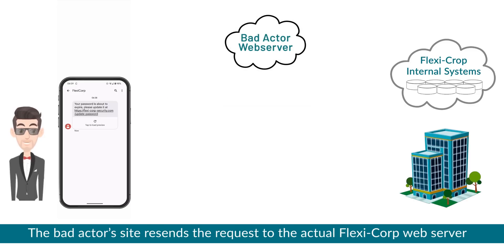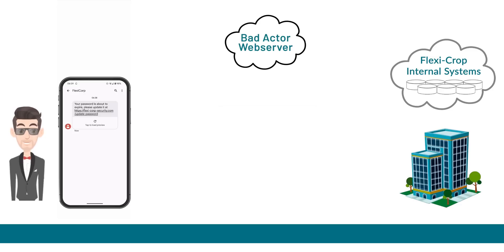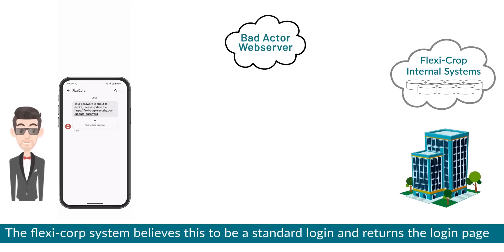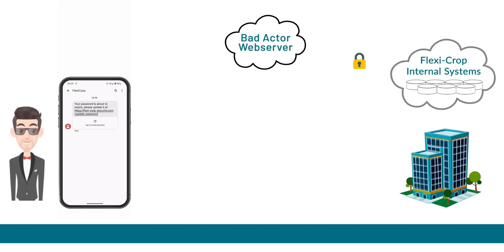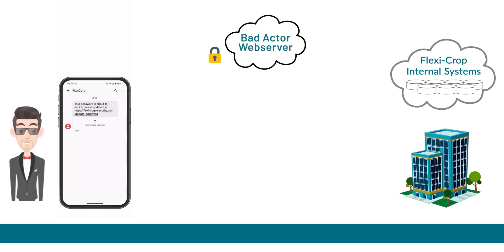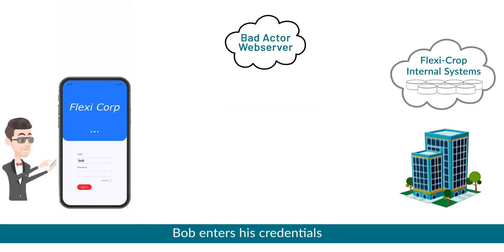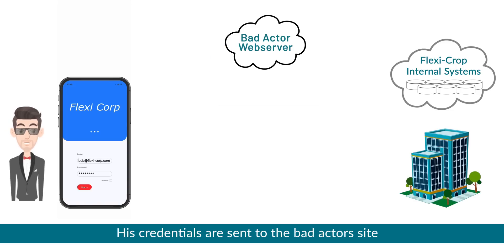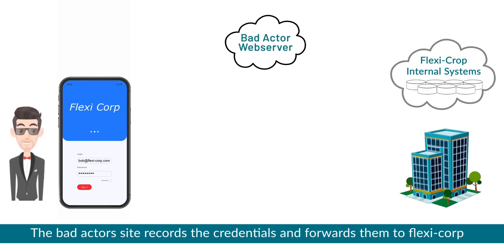When Bob clicks on the link, the request goes to the bad actor's site — not Flexi Corp. The bad actor's site resends the request to the actual Flexi Corp web server. The Flexi Corp system believes this to be a standard login and returns the login page. The bad actor's web server records the login page and sends it on to Bob.